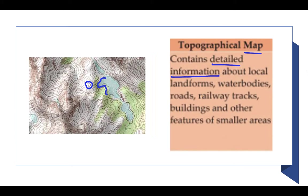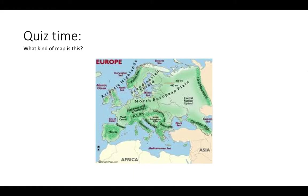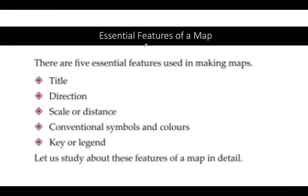Now the essential features a map should contain. There are five essential features: title, directions, scale, conventional symbols, and colors or key or legend. A map should have all five of these essential features.